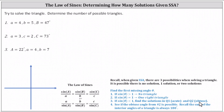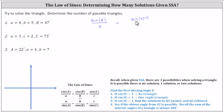For number one, we have the length of side A is four, the length of side B is five, and angle B equals 47 degrees. Let's begin by determining the measure of angle A using the law of sines, which gives us sine of A divided by four equals sine of 47 degrees divided by five.